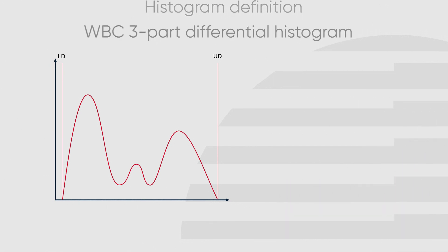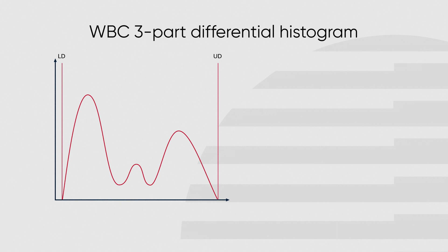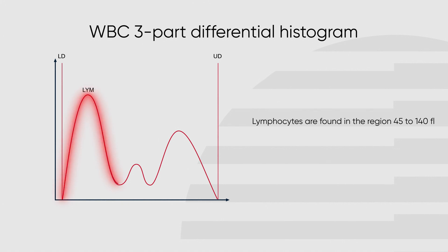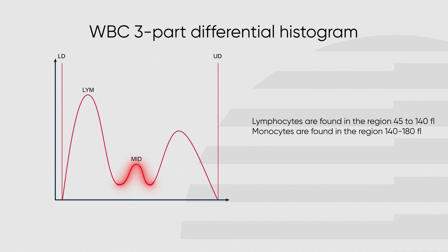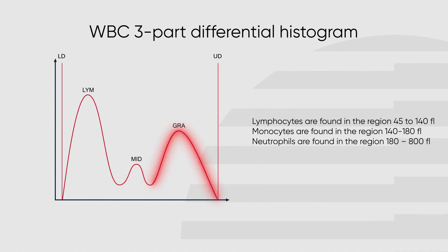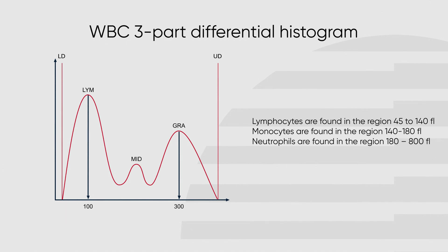In a three-part hematology system, white blood cells are further separated into three populations: lymphocytes, mid cells (mainly containing monocytes), and granulocytes (mainly neutrophils). Lymphocytes and granulocytes are visualized in two distinguishable peaks centered at about 100 femtoliters and 300 femtoliters. Mid cells are situated in between these two main population peaks.